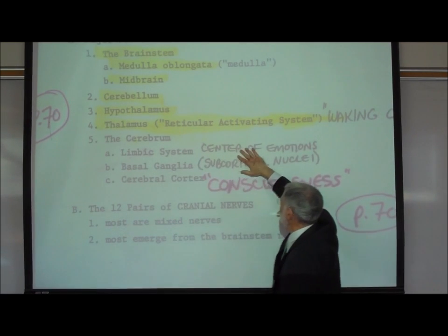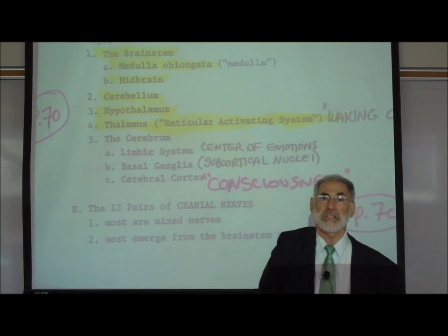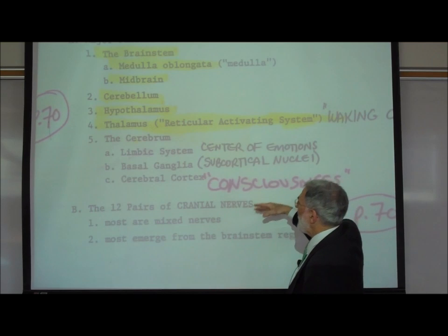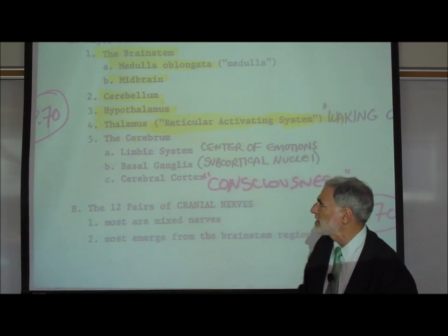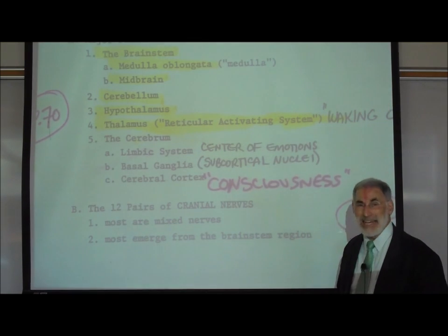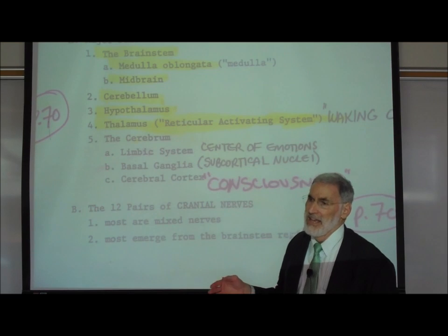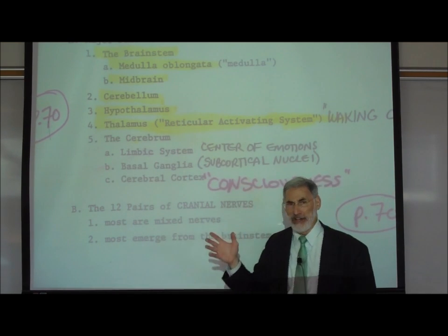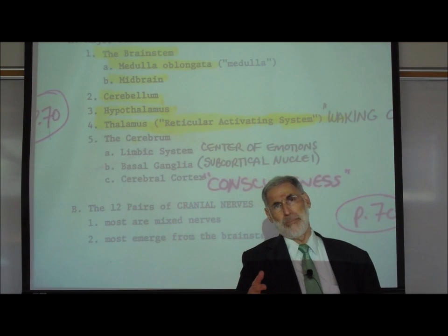Then there is this limbic system, the center of emotions, which we will talk more about later when we look at more details of the brain. Another part of the cerebrum within the cerebral hemispheres are the so-called basal ganglia, also known as the subcortical nuclei. The basal ganglia play a role in voluntary skeletal muscular activity.